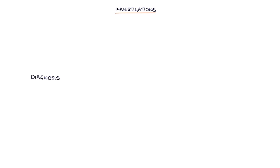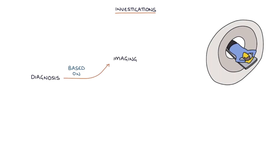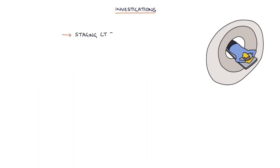Let's talk about investigations. The diagnosis is based on imaging — for example a CT or MRI scan — plus histology from a biopsy of the lesion. A staging CT scan involves a full CT of the thorax, abdomen and pelvis, or CT TAP, and is used to look for metastasis and other cancers.